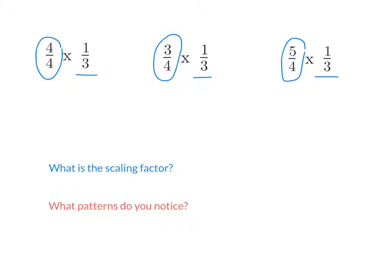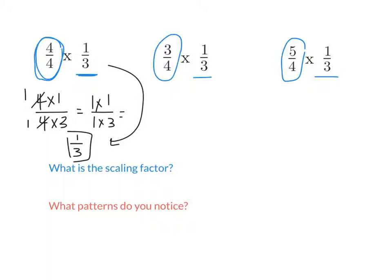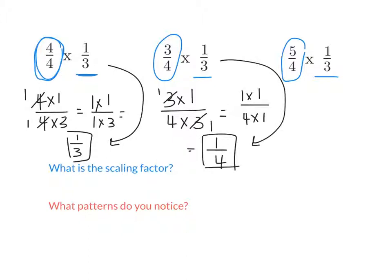Based on your previous observations, how will the scaling factor of 4 fourths affect 1 third? It will keep 1 third the same. Let's multiply: 4 times 1 over 4 times 3 — these simplify to 1 times 1 over 1 times 3, which is 1 third. It stayed the same, just as we predicted. How will 3 fourths affect 1 third? It will make it smaller. We have 3 times 1 over 4 times 3 — 3 and 3 cancel, giving us 1 fourth. And 1 fourth is smaller than 1 third.